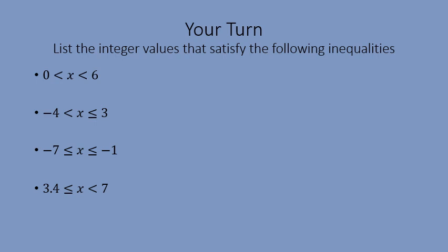I hope those questions went well. Let's quickly work through them together. Reading from the centre going outwards: x is greater than 0 but less than 6, so the integers are 1, 2, 3, 4, 5 — it can't be equal to 6. Next: x is greater than minus 4 and less than or equal to 3, giving minus 3, minus 2, minus 1, 0, 1, 2, and 3 — it can be equal to 3. The third set gives minus 7, minus 6, minus 5, minus 4, minus 3, minus 2, and minus 1.